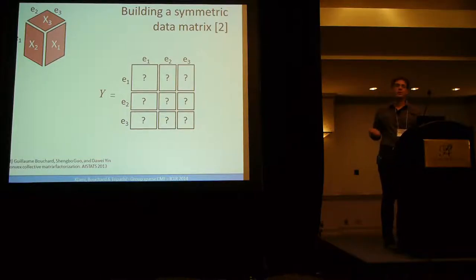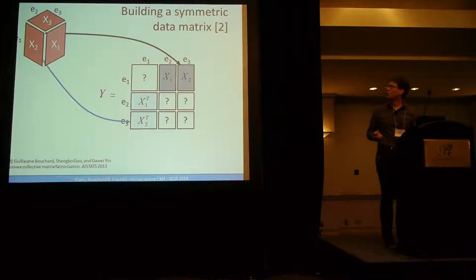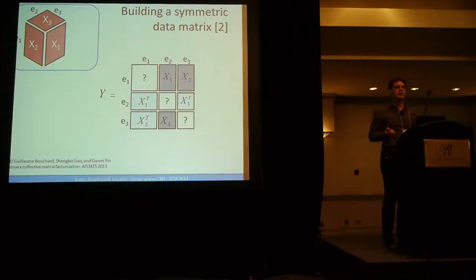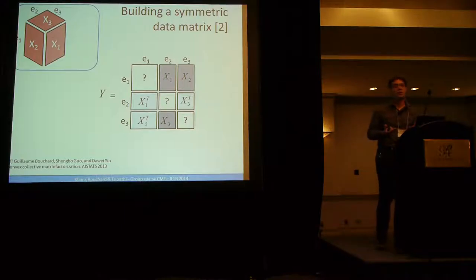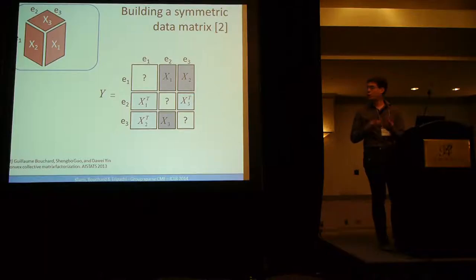So here you have this example of a circular schema. You can start with an empty matrix which is rectangular which contains all the entities of all the types. You can represent it as putting x1 in this slot, the transpose of x1 in this slot. And you do it again with x2 and with x3. So now you end up with a symmetric matrix with some missing data. But you can factorize it very efficiently. It leads to some reweighted eigenvalue solver.